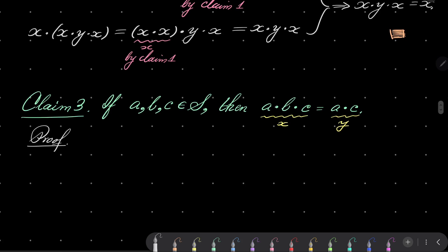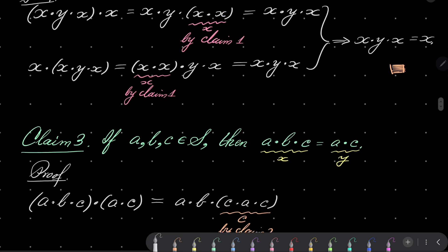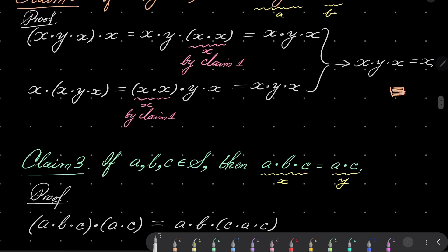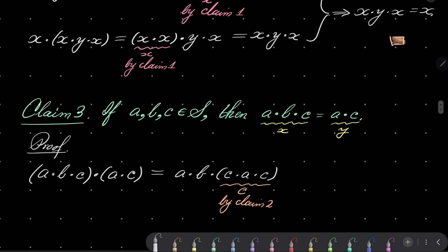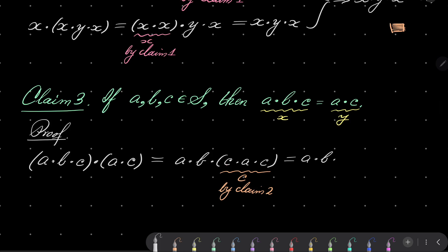So let's investigate first a·b·c·a·c. I will put parentheses in different order. I will put them in the following way: a·b·c·a·c. And now look closely. Here we have c, a, c. It can be replaced by just c, by claim number two. Yes, let's go back to claim number two. x·y·x is x. c·a·c is c. So we have a, b, c. Right.